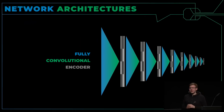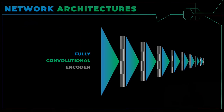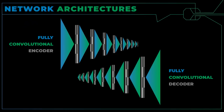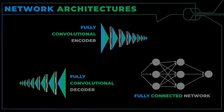Ich habe euch einige Architekturen gezeigt. Der komplette Faltungscodierer benutzt viele Bilder, um diese Bilder in nur ein paar Parameter umzuformen. Der Decoder nimmt dann diese wenigen besonderen Zahlen und versucht das ursprüngliche Bild wiederherzustellen — entweder das gleiche Bild oder eine andere Präsentation. Wir haben auch das komplett verbundene Netzwerk gesehen, wo jedes Neuron zu jedem Neuron in der nächsten Ebene verbunden ist.